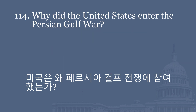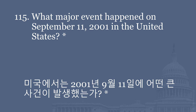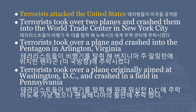Why did the United States enter the Persian Gulf War? To force the Iraqi military from Kuwait. What major event happened on September 11, 2001 in the United States? Terrorists attacked the United States. Terrorists took over two planes and crashed them into the World Trade Center in New York City. Terrorists took over a plane and crashed into the Pentagon in Arlington, Virginia. Terrorists took over a plane originally aimed at Washington, D.C. and crashed in a field in Pennsylvania.